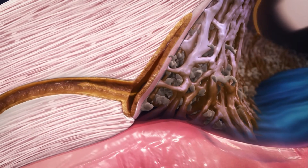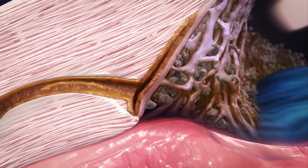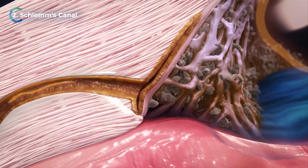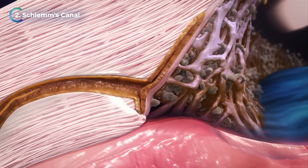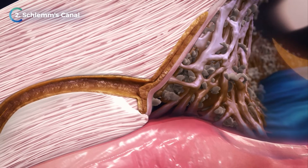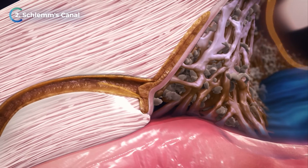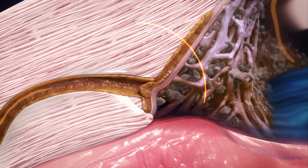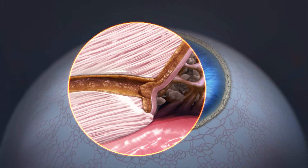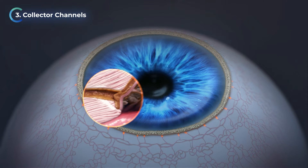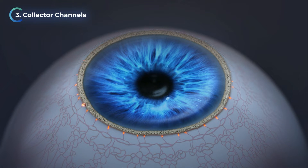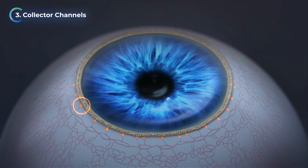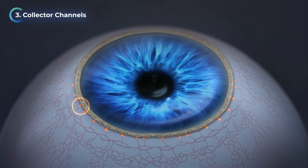Glaucoma also causes Schlemm's canal, a tube-like structure, to become narrowed or collapsed, further limiting the drainage of fluid. Additionally, the collector channels, small tubes connected to Schlemm's canal, can become blocked.